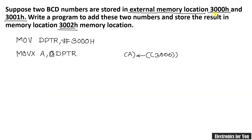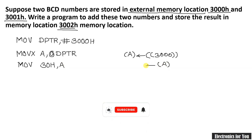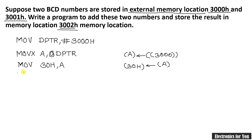To get the second number we need to use DPTR again, but loading DPTR with the new address would overwrite the first number in the accumulator. So we save the first number to an internal memory location using MOV 30h, A. Now the first number is stored at internal memory location 30h.